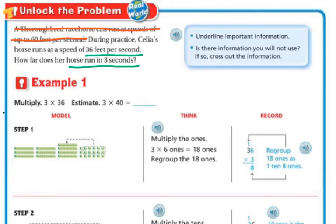So next, my problem is 36 times 3. And if I'm going to estimate that, 36 is close to 40. And 3 times 4 is 12. And then I have my 0, because it's 3 times 4 tens, which is 120. So I know that my answer for 3 times 36 should be close to 120.